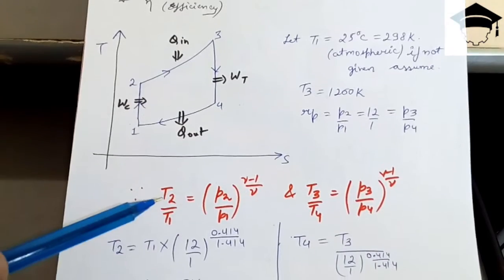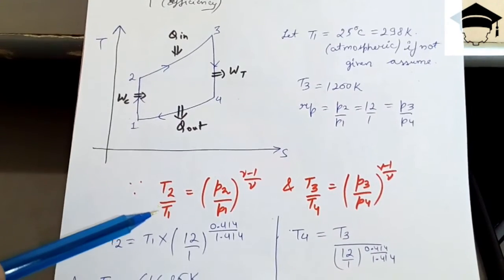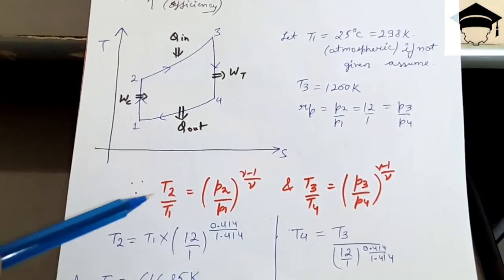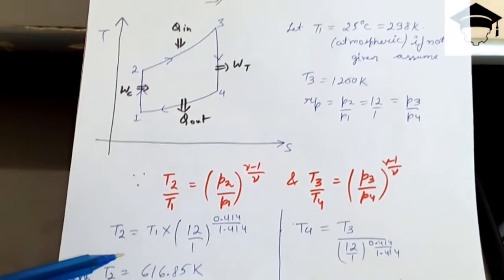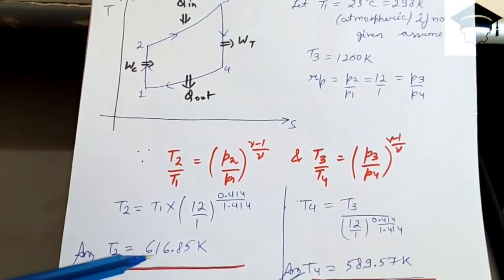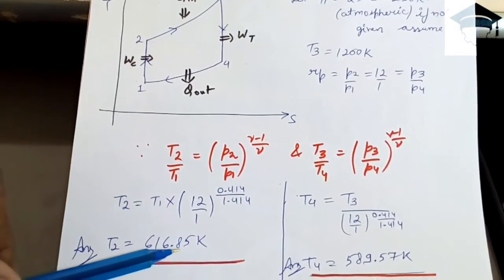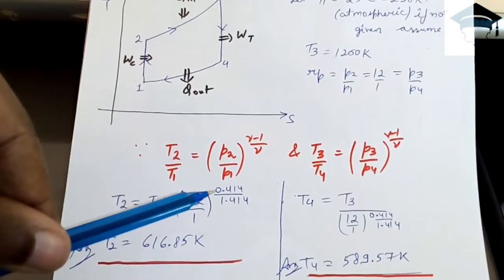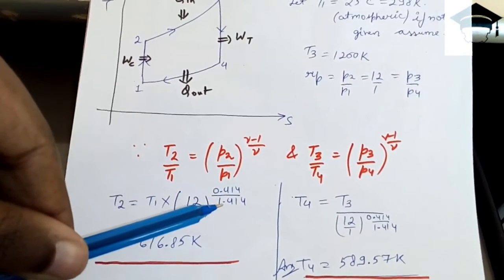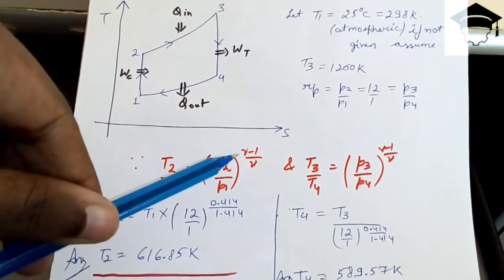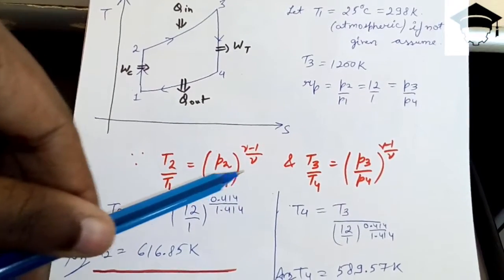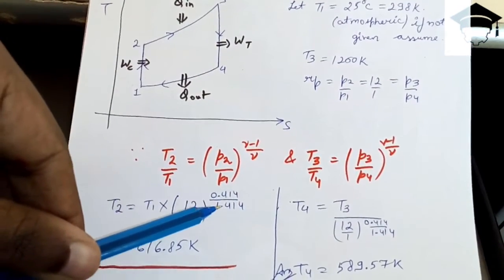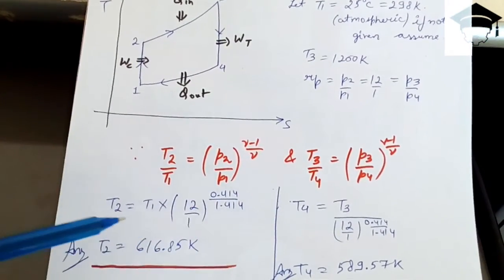Similarly, using T3/T4 = (P3/P4)^((γ-1)/γ), we substitute the values and find T4 = T3 divided by that ratio. T4 comes out to be 589.57 Kelvin.